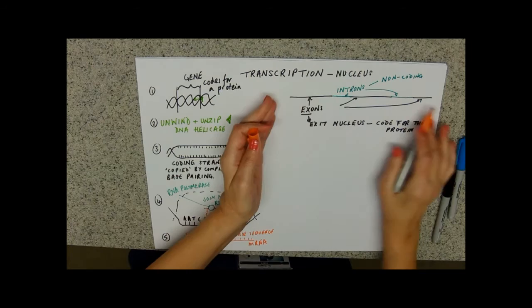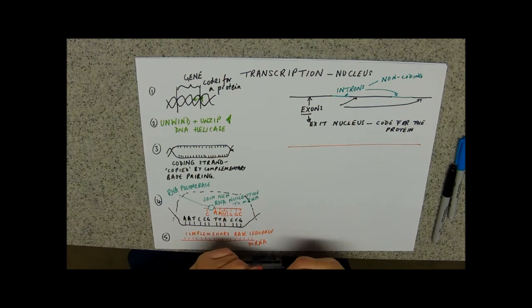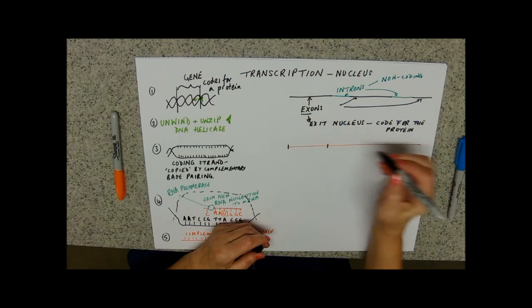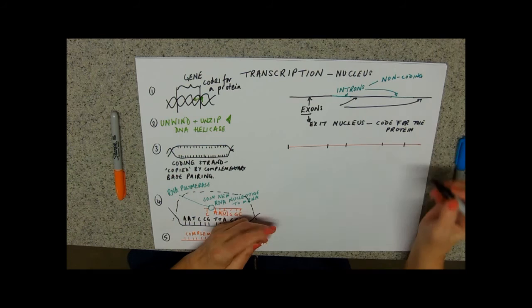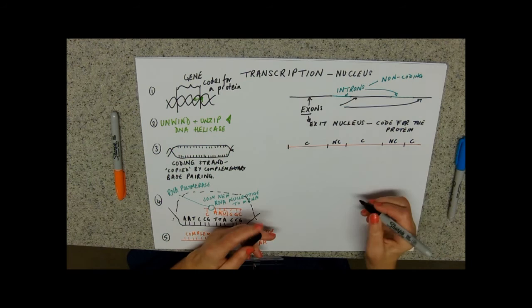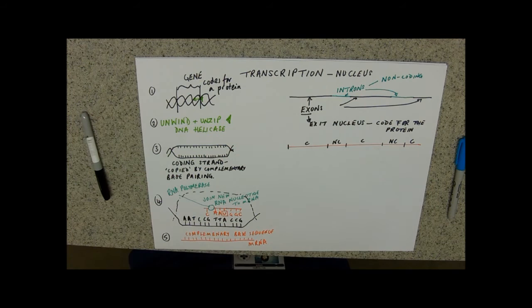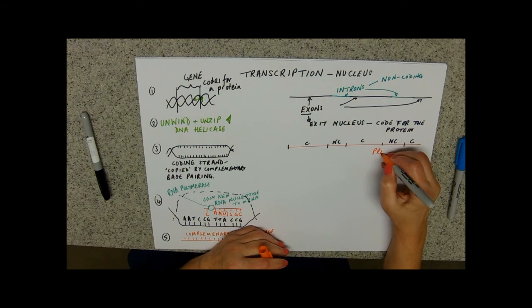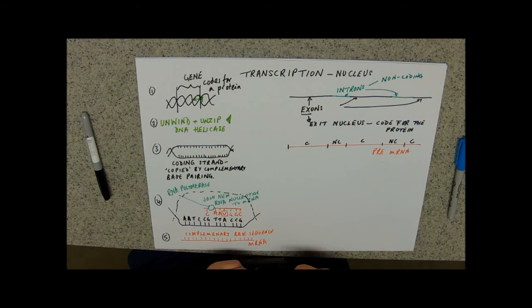If we looked at our mRNA then, our mRNA has just read that entire sequence. So, it has in it, the coding bit, and non-coding. So, we've got coding, non-coding, coding, non-coding, and coding. So, it needs to be edited. So, we call this mRNA that contains the introns and the exons. This is called pre-mRNA. And this then needs to go through a process of editing.